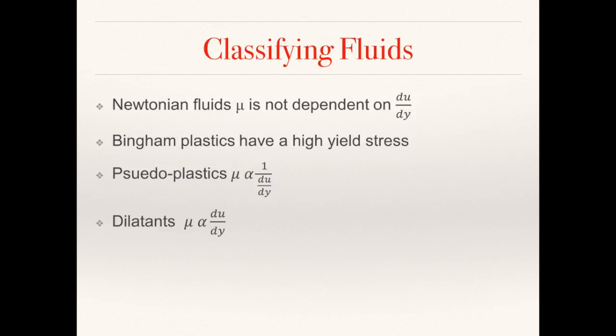Pseudoplastics, or shear thinning fluids, are fluids where the application of shear stress results in reduced viscosity. This means that the greater the shear stress, the more easily the fluid will flow. Whipped cream and blood are both common examples of shear thinning fluids.